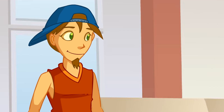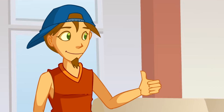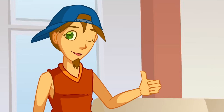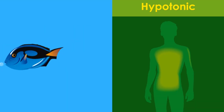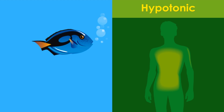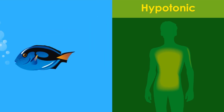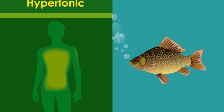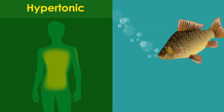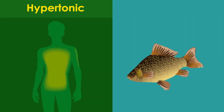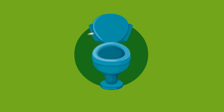And we aren't dolphins surrounded by water all the time. That's right! Therefore, our urine will be in between these ends. It'll be hypotonic if compared to fish of salty water, and hypertonic if compared to fish of fresh water.